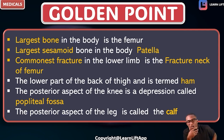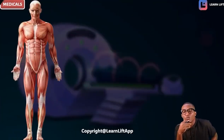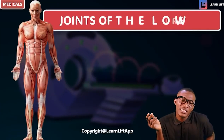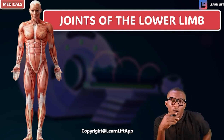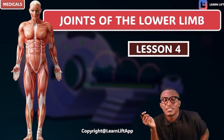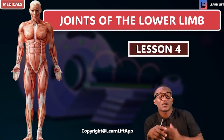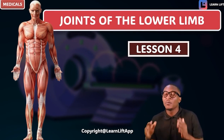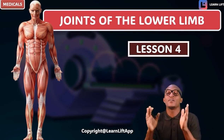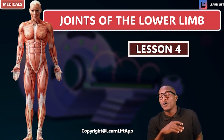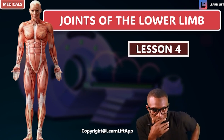Understand these golden points — take them over and over again. Next class we're going to talk about the joints of the lower limb, which will be lesson four. We'll tackle the hip joint and so on. Remember this is the overview — we're just taking the overview of everything about the lower limb.